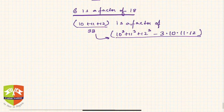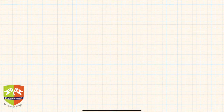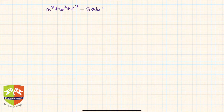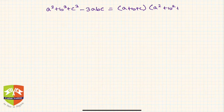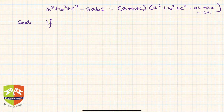Now let us come to the conditional identity. We learned that a³ + b³ + c³ - 3abc = (a + b + c)(a² + b² + c² - ab - bc - ca). The condition we consider is: what if a + b + c = 0?